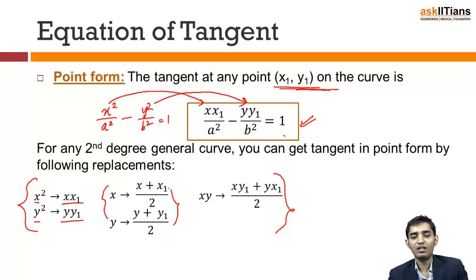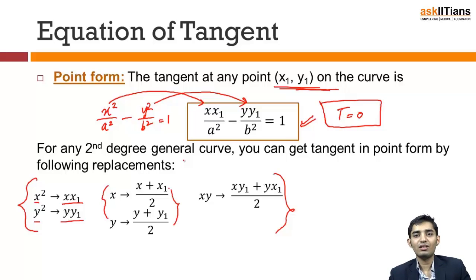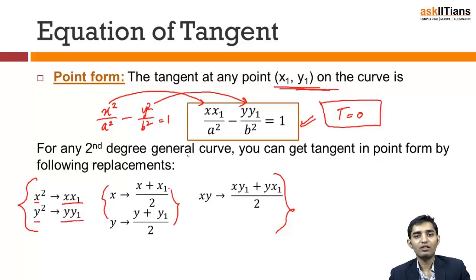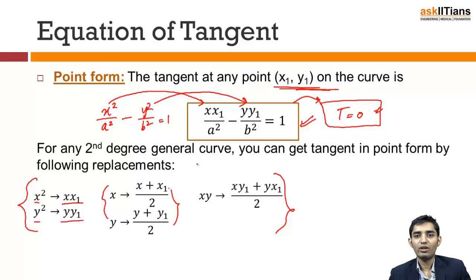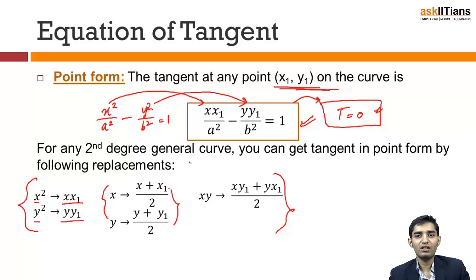This equation of tangent is generally represented as T equal to 0. Wherever T equal to 0 is written, it simply means we are using these replacements. That is the meaning of T equal to 0 — it is nothing but making those substitutions.